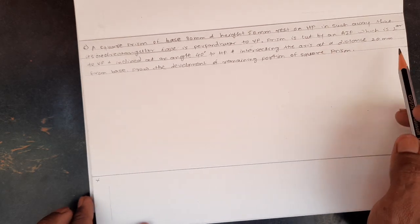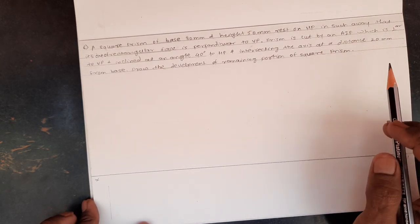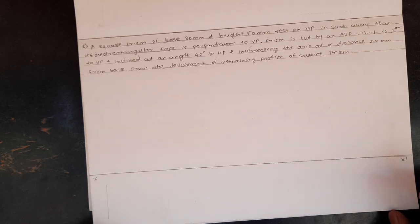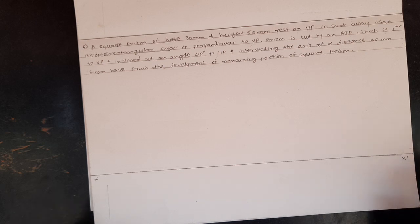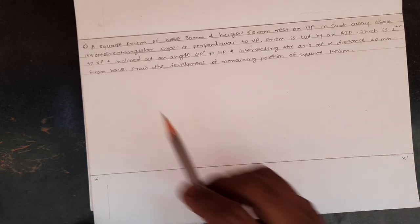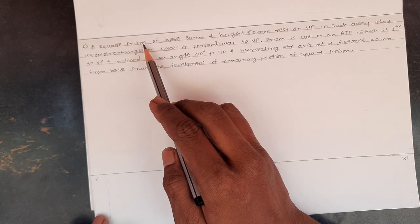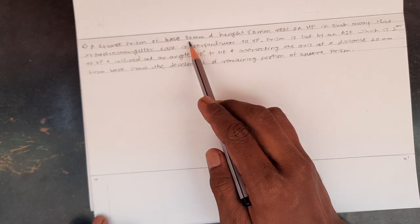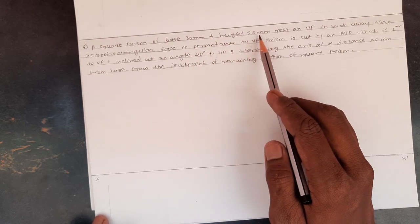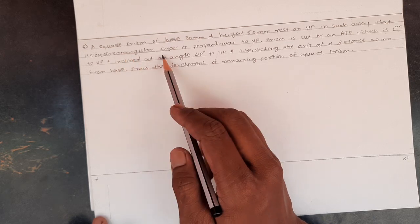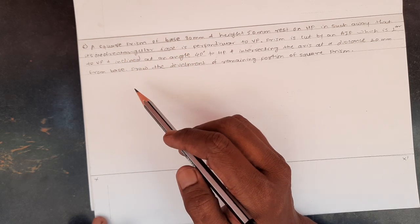Whenever solving a problem on development of lateral surfaces, first check the position of the given entity — whether it is a prism or pyramid, and whether it is perpendicular to the VP, parallel to the VP, or makes some angle with the VP. In this statement, the square prism has a base of 30mm and an axis of 50mm.